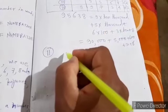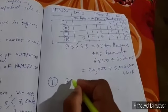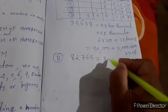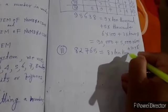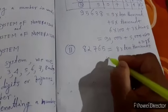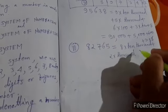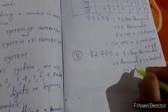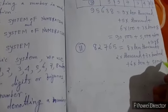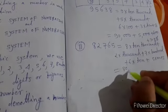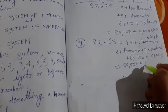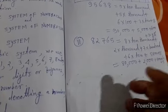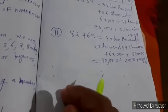In the same way, we can write question 2. The number is 82,765 equals 8 times 10,000 plus 2 times 1,000 plus 7 times 100 plus 6 times 10 plus 5 times 1. That is equal to 80,000 plus 2,000 plus 700 plus 60 plus 5. This is expanded form of number.